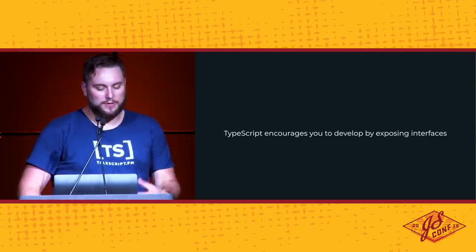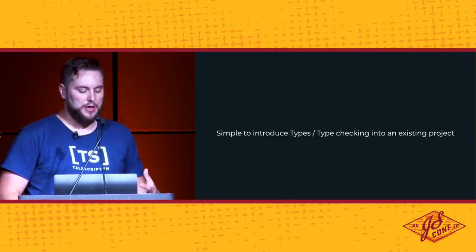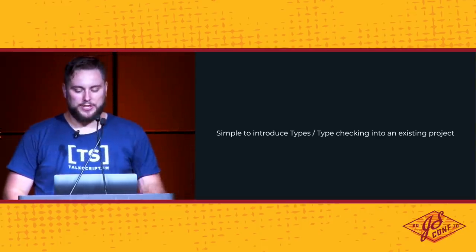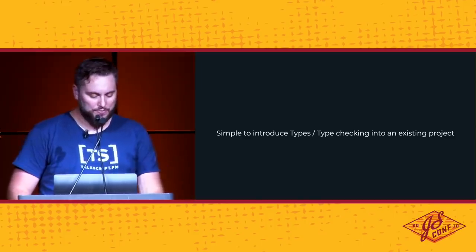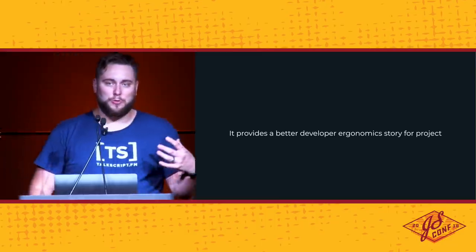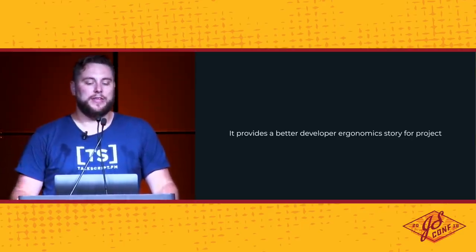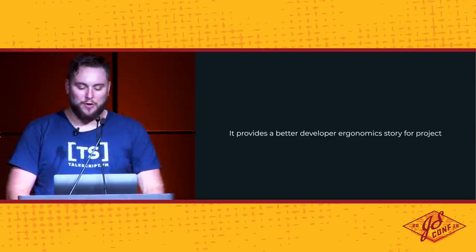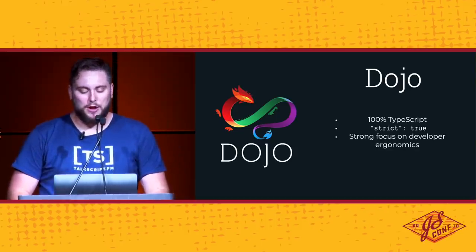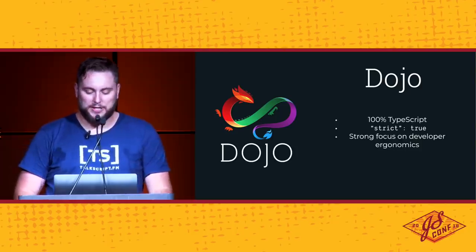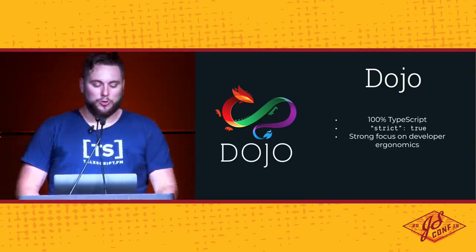TypeScript really encourages you to develop by exposing interfaces — creating contracts that you adhere to. It's really simple to introduce type checking into your project without converting everything all at once; you can do as much or as little as you like. The more you do, the more advantages you'll get. It provides a better ergonomic story: it's easier for everyone to understand the APIs, easier for new developers coming onto the project with smart tooling to help them navigate the code, and makes it easier to maintain and refactor over time. I work on an open source project called Dojo, which received a complete rewrite earlier this year entirely to strict TypeScript, with a main focus on developer experience.